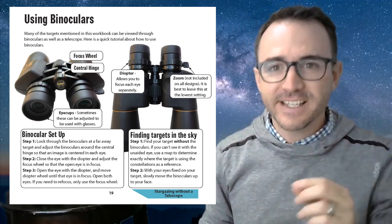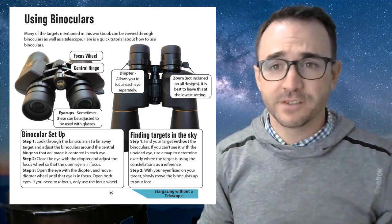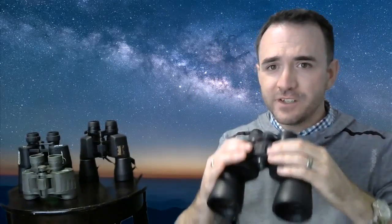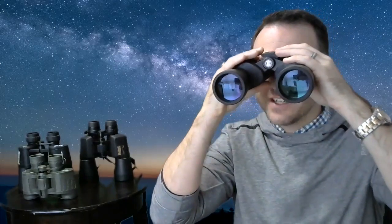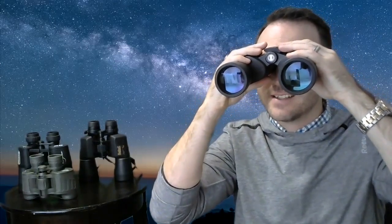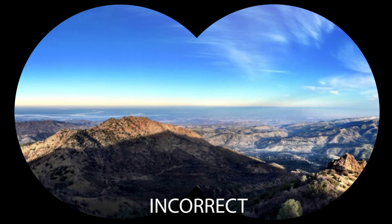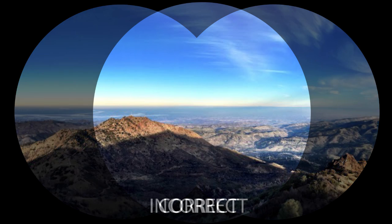So if you're going to learn to use binoculars to look at objects in space, you need to know how to use binoculars to see things on Earth. If you're following along in the 50 Things to See with a Telescope activity workbook, there are detailed instructions on how to use binoculars on page 19. But I'll also tell you right now. So for me, I'm going to remove my glasses. First, look through the binoculars at a faraway target and adjust the binoculars around the central hinge so that the image is centered in both eyes. It should not look like it does in the movies with two merging circles. You should only see one circle.